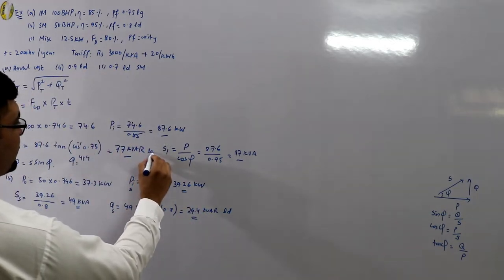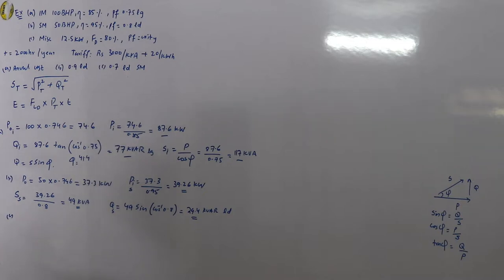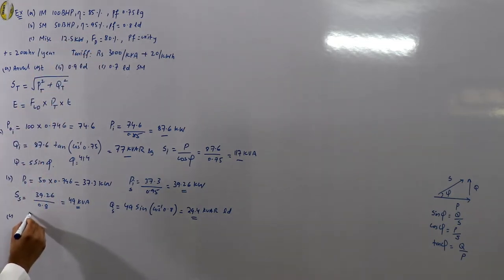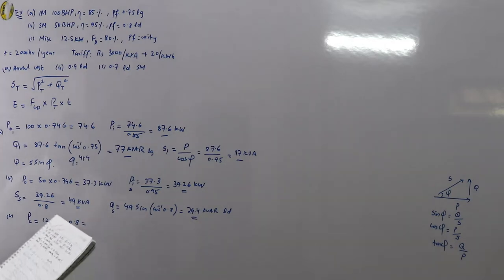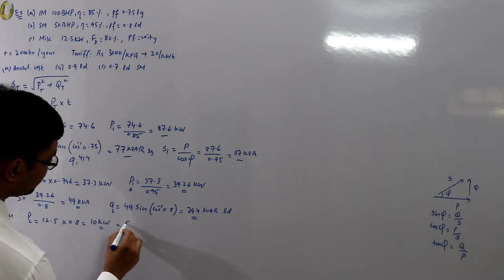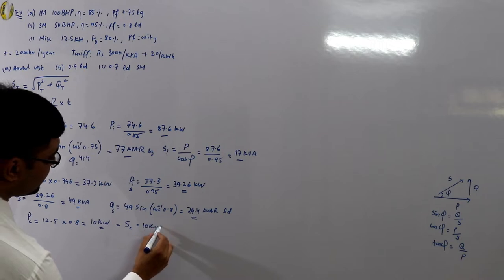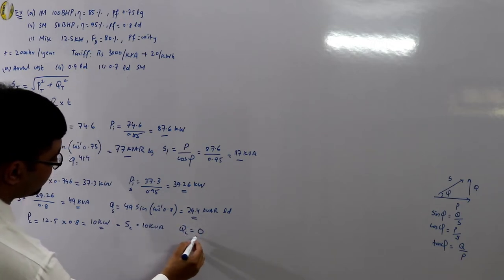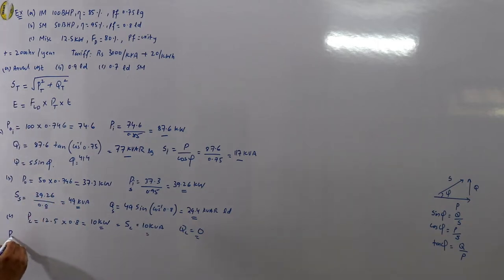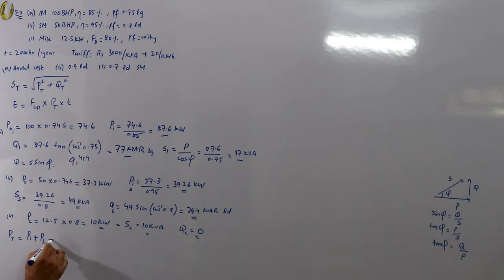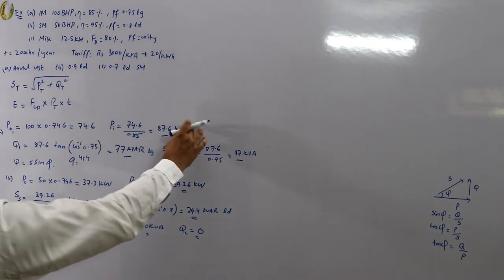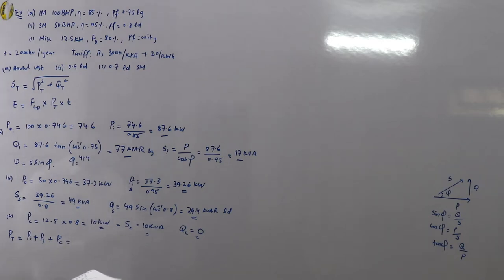For Load C — the miscellaneous load — the maximum demand P_c = connected load × demand factor = 12.5 × 0.8 = 10 kilowatts. S_c = 10 kVA and Q_c = 0, since power factor is unity. P_total = P_i + P_s + P_c = 87.6 + 39.26 + 10 = 137 kilowatts.